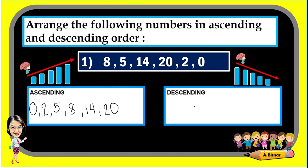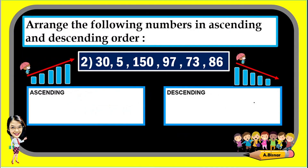The last one in ascending order is twenty. To arrange in descending order, we start from the highest to the lowest: twenty, then fourteen, then eight, then five, then two, and the last one is zero. It's very easy!